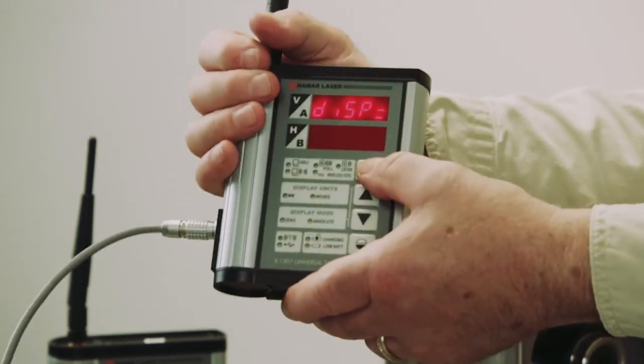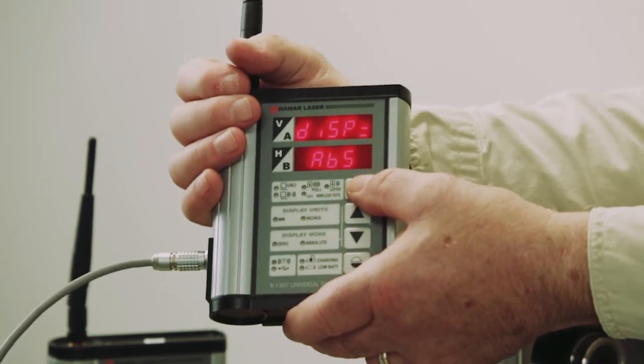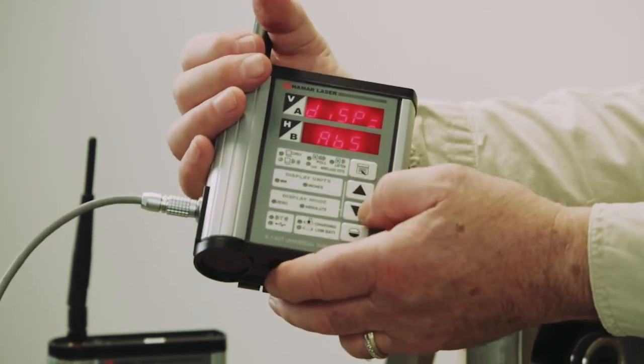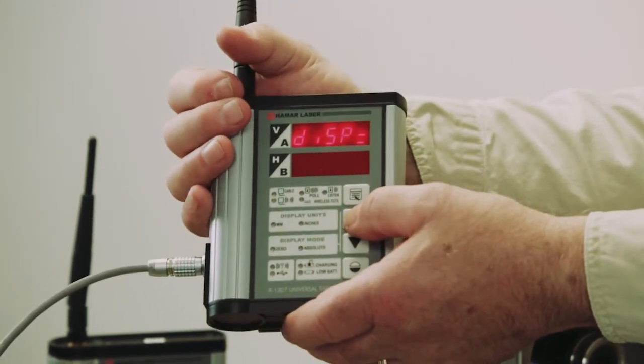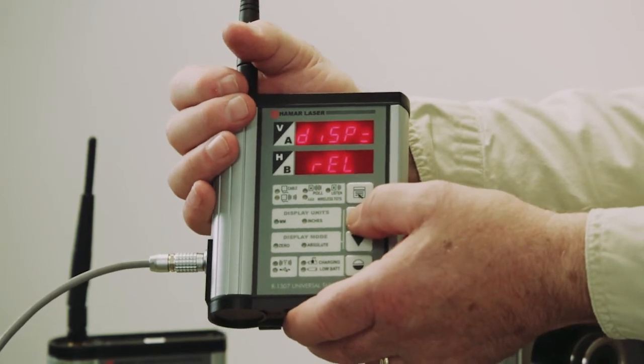The display in this one, I can have absolute or I can have zero. If I press the up arrow key, I can change this to relative or basically zero mode.